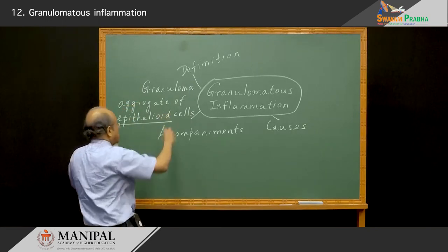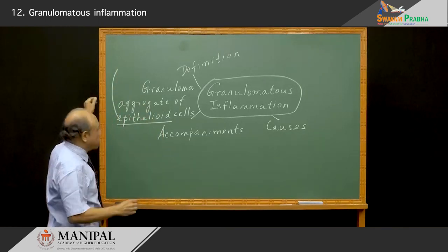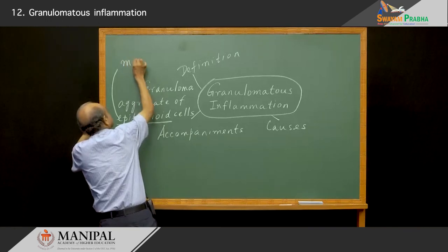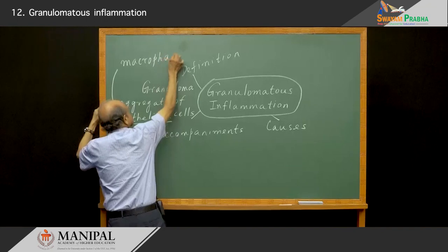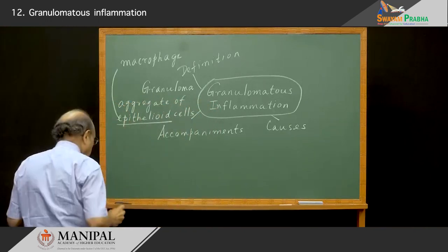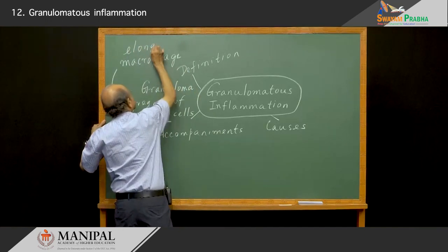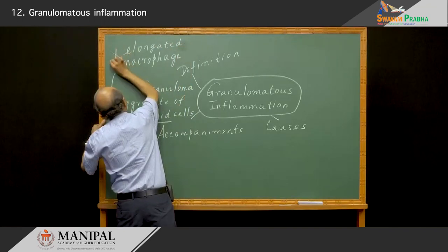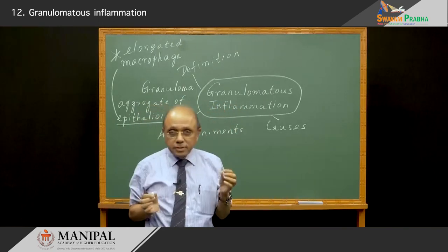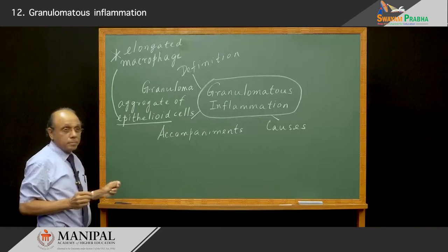What is an epithelioid cell? Let us understand the characteristics of an epithelioid cell. The first thing one must understand is that it is a macrophage or a histiocyte. The epithelioid cell is a macrophage which has become elongated — it is an elongated macrophage. This is the first thing one must remember. Even though it is called an epithelioid cell, it is a histiocyte or a macrophage which has become elongated.